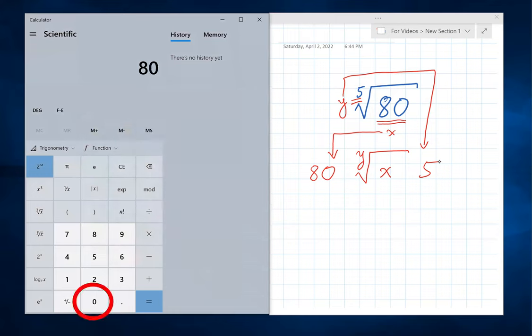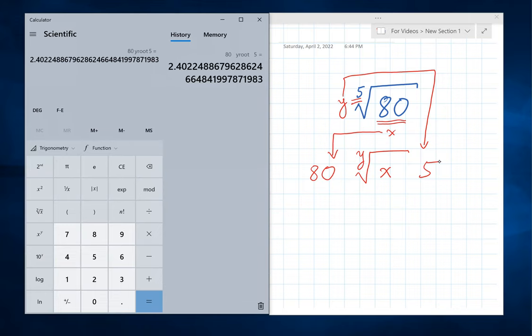80, y root of x, then 5, then equals 2.402248869, etc.